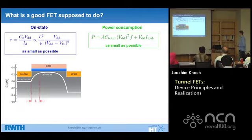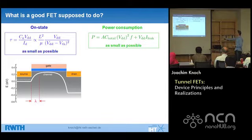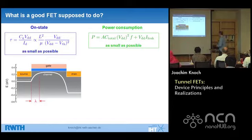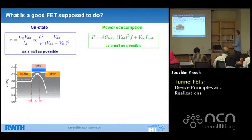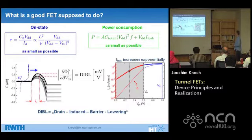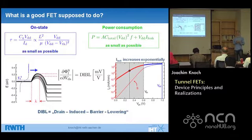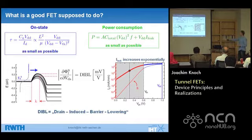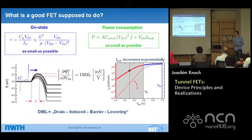When you scale down a transistor, you have to be careful because otherwise you will experience so-called short channel effects. The conduction band profile shows that the source-channel PN junction has a certain spatial extent, lambda. If I scale the channel length down, I get an overlapping PN junction, a reduced barrier — that's drain-induced barrier lowering — and an exponential increase of current. This is not good for power consumption because you get an exponential increase of leakage current.